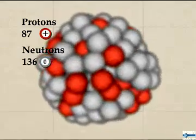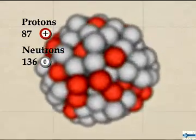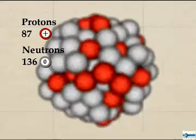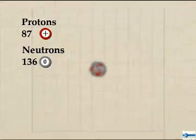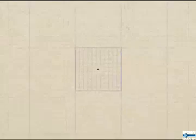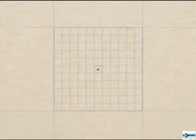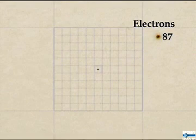Francium has 87 negatively charged electrons to balance its 87 protons. These electrons are found in seven orbital shells surrounding the nucleus, which can be visualized as being built up from the nearest preceding noble gas.